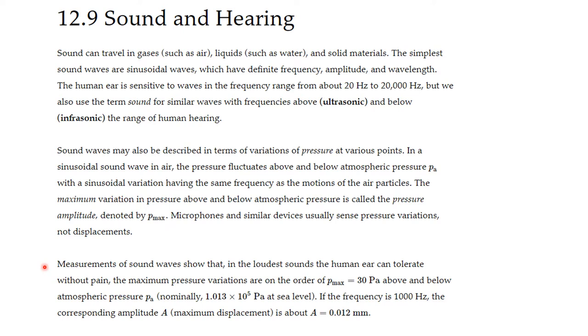Measurements of sound waves show that in the loudest sounds the human ear can tolerate without pain, the maximum pressure variations are in the order of p max is equal to 30 pascals above and below atmospheric pressure, p sub a. Nominally, 1.013 times 10 to the fifth pascals at sea level. If the frequency is 1000 Hz, the corresponding amplitude maximum displacement is about 0.012 mm. This is a very small displacement and this makes the human ear remarkably sensitive.